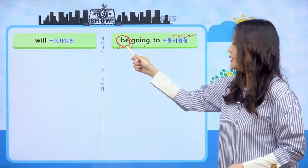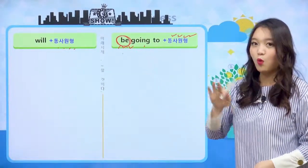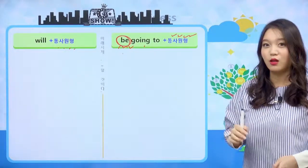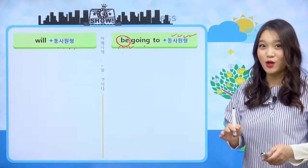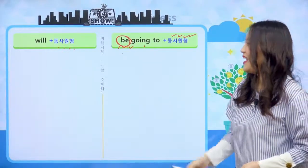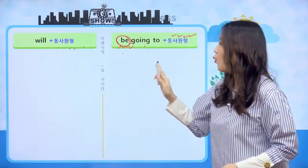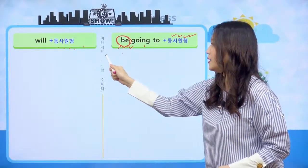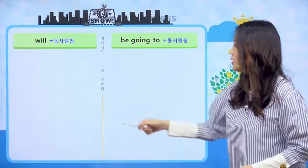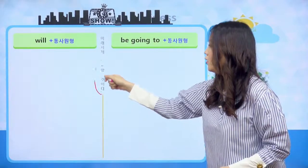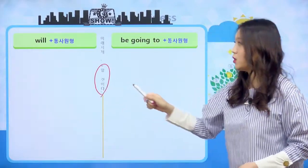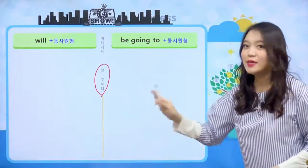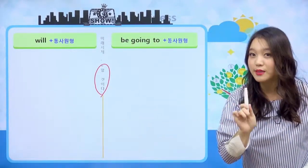be는 am, are, is, was, were로 바뀌어야 된다까지 우리 친구들 기억하죠? will과 be going to의 공통점은 둘 다 미래의 시제를 나타내고, 해석은 '뭐뭐 할 것이다'라고 해석이 된다는 것이 공통점인 반면 차이점도 있습니다.